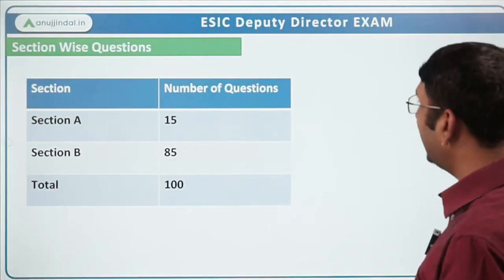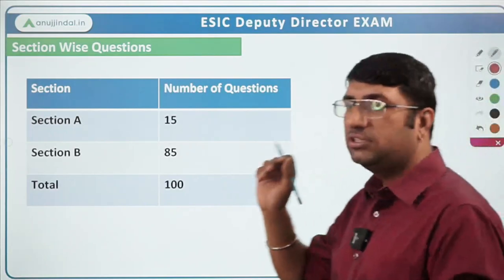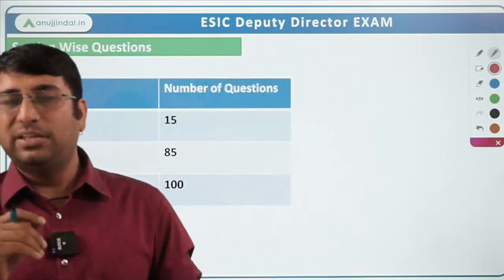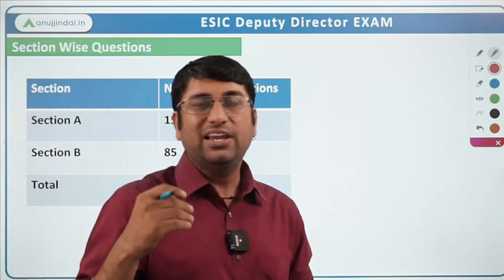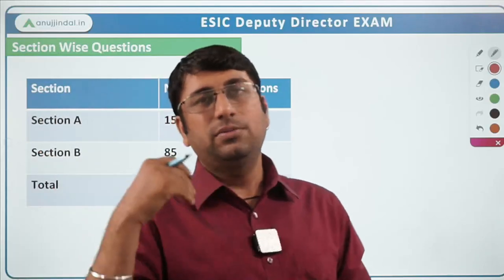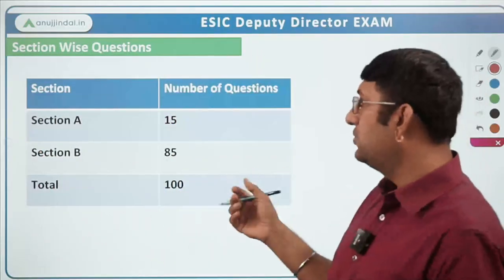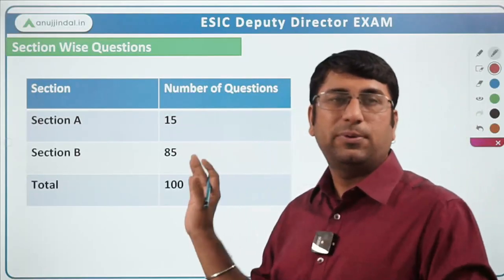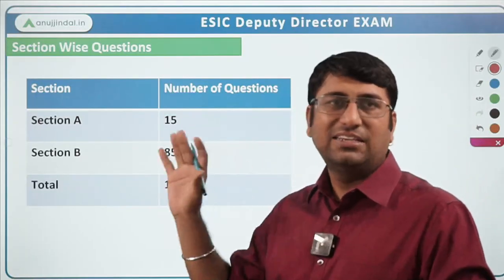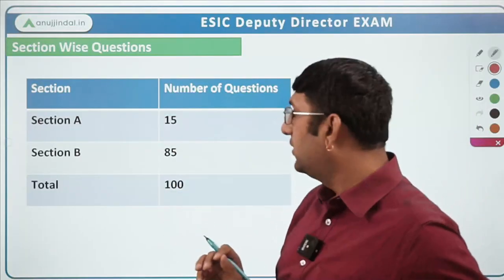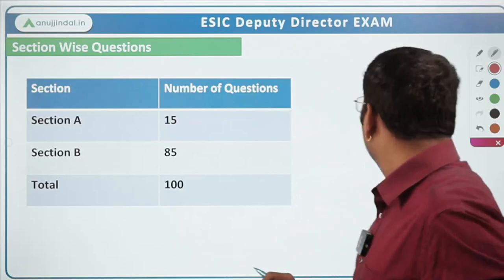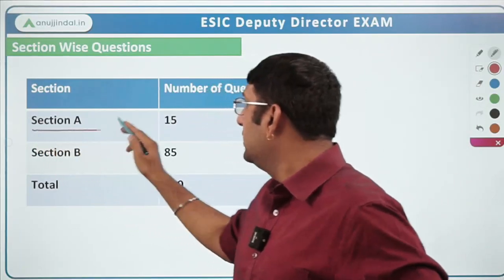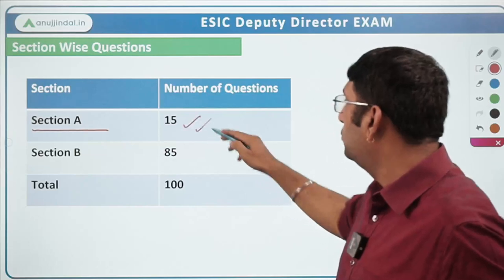Now let me answer the second question — section-wise breakdown. Overall we know the total, but section-wise: Section A has 15 questions and Section B has 85 questions. This is purely based on past year paper analysis. If I talk about Section A, 15 questions were asked from it.